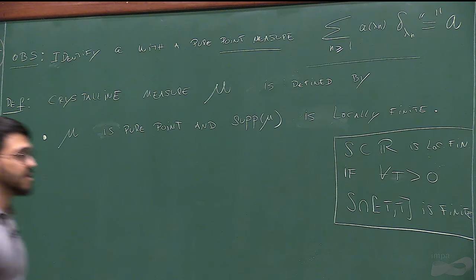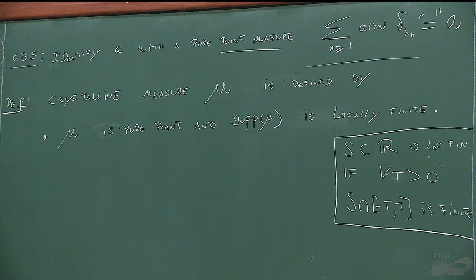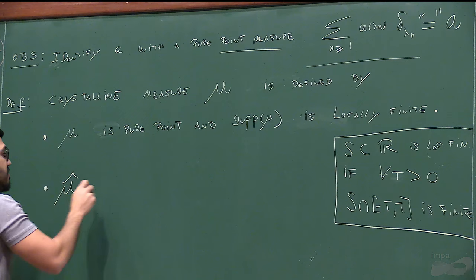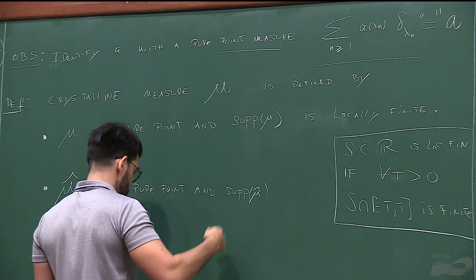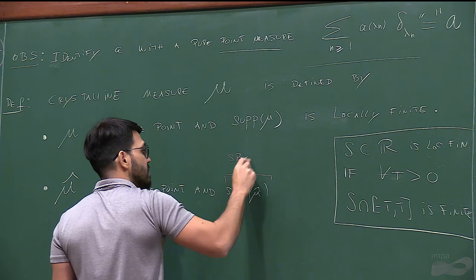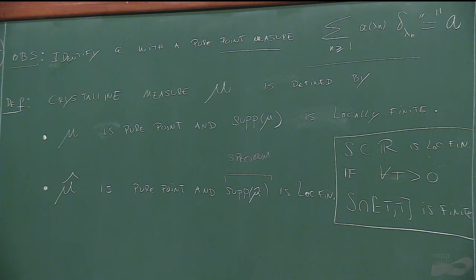That represents the atomic structure of the crystal you want to study. But crystalline asks even more: the Fourier transform mu-hat is also pure point, and the support of mu-hat—which we often call the spectrum—is locally finite. So that would be a crystalline measure.